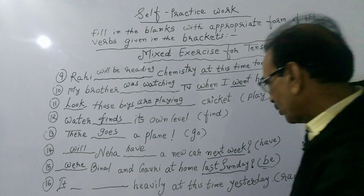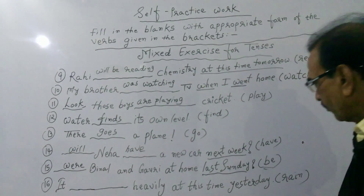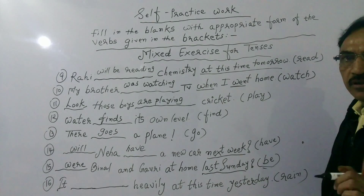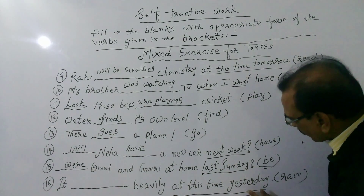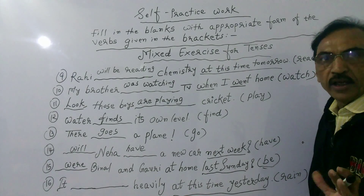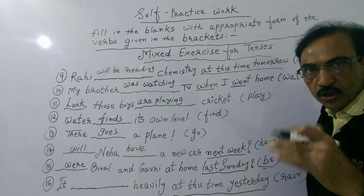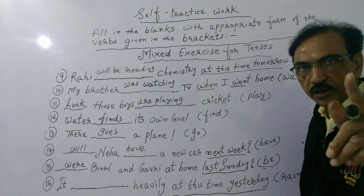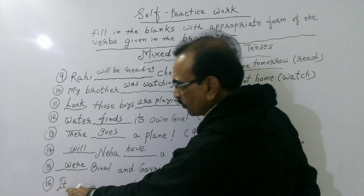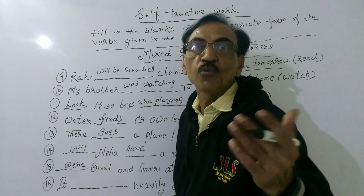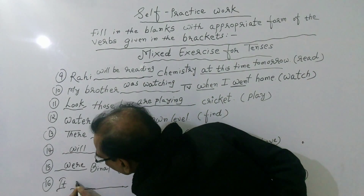Last sentence: It dashed heavily at this time yesterday. 'At this time yesterday' indicates a reference of time in the past, denoting continuous past tense. 'It' is third person singular, so we use 'was' plus verb with -ing. The correct answer is: It was raining heavily at this time yesterday.